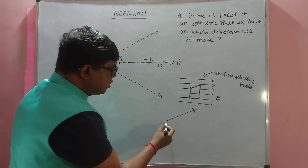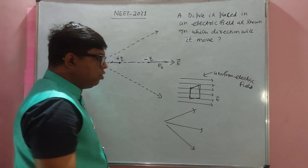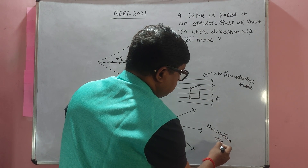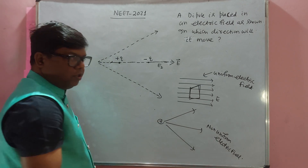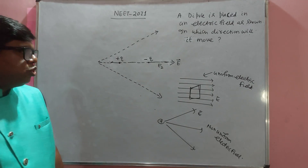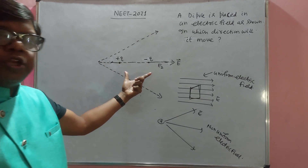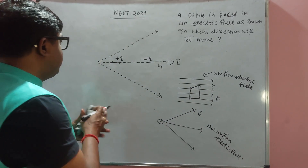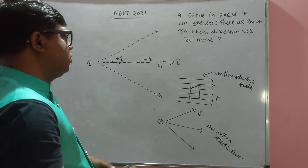When the electric field is non-uniform, the field lines are not equispaced. In our figure, the field lines are diverging, which means this charge must be positive — a positive charge is the source of diverging field lines. So this is a case of non-uniform electric field.